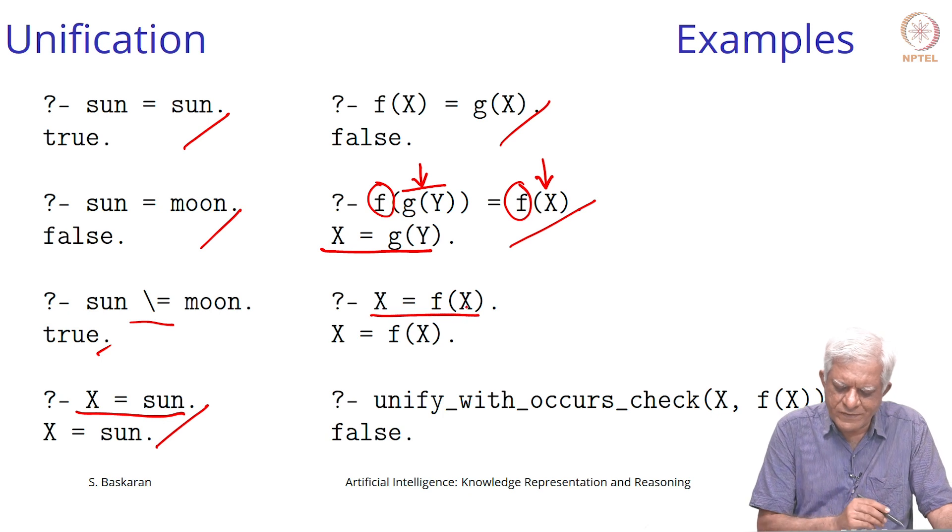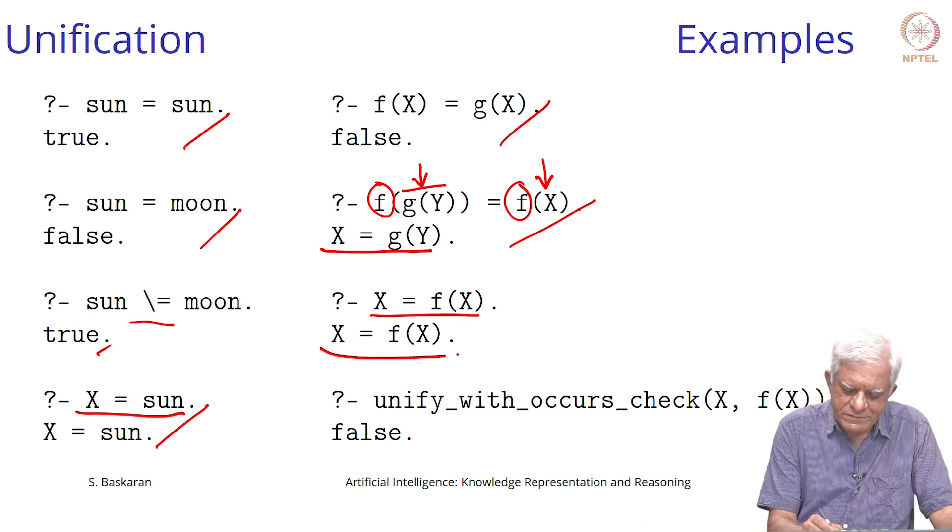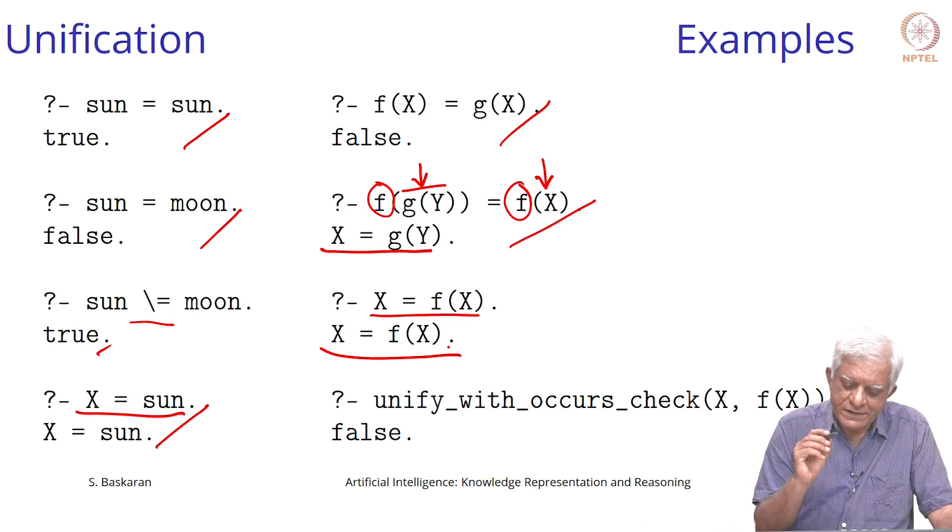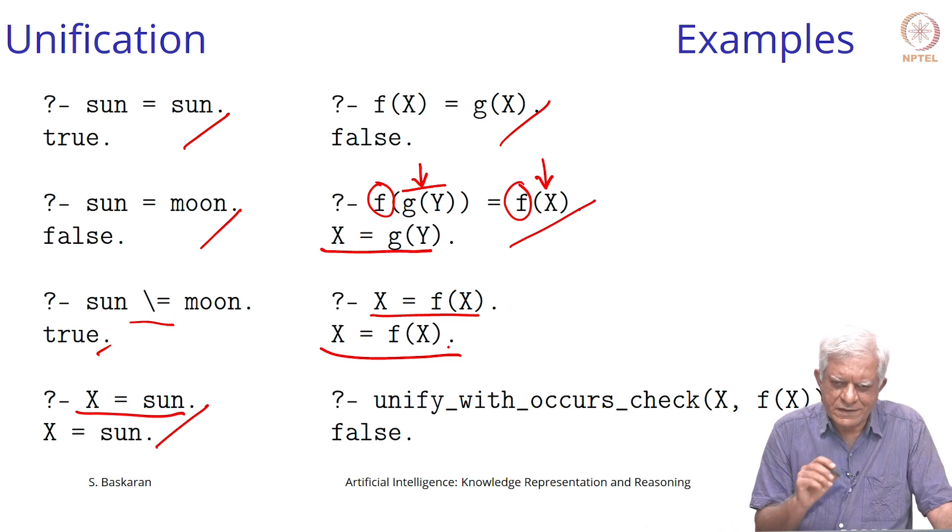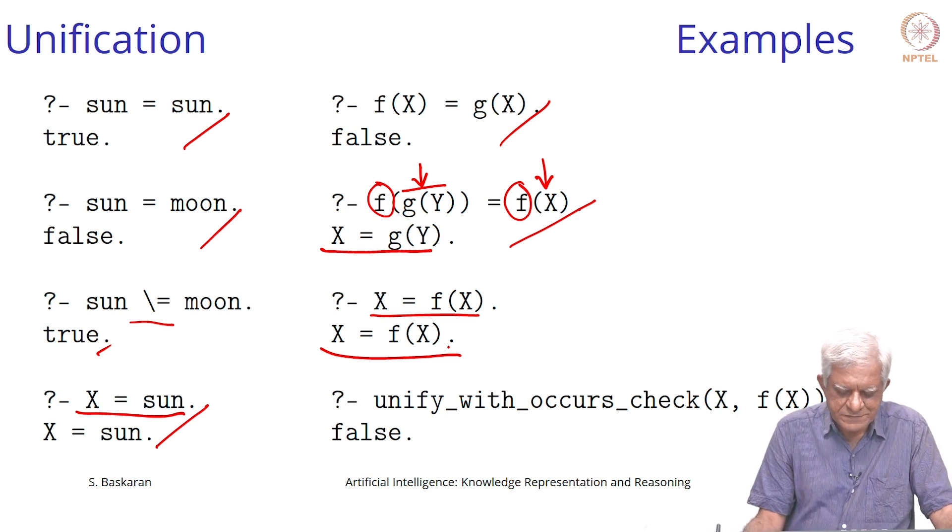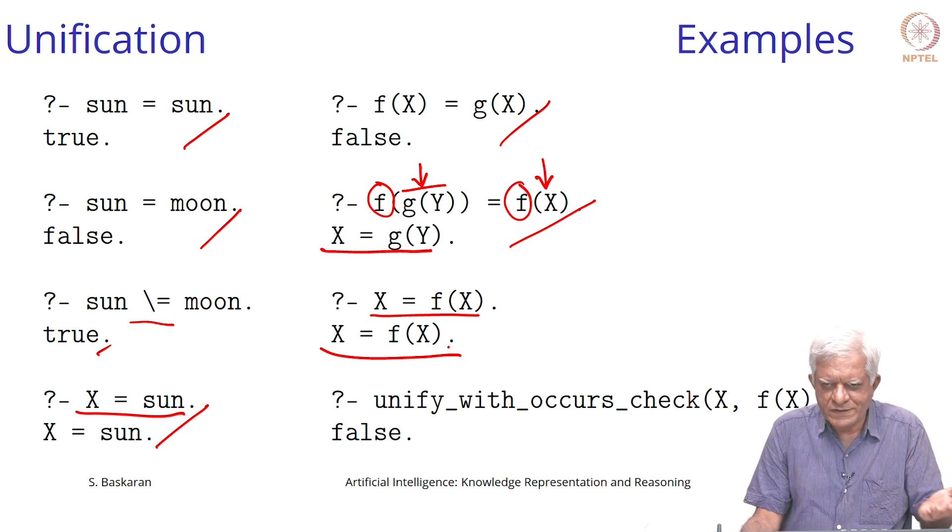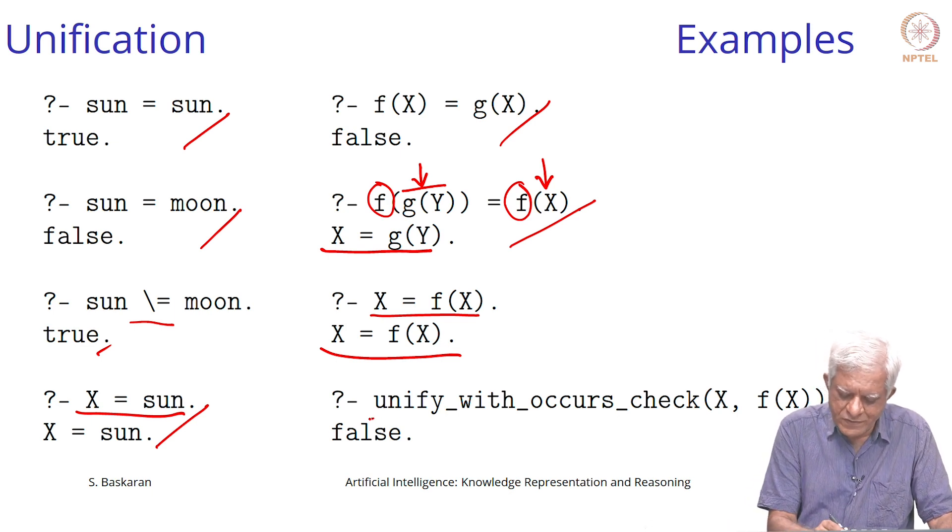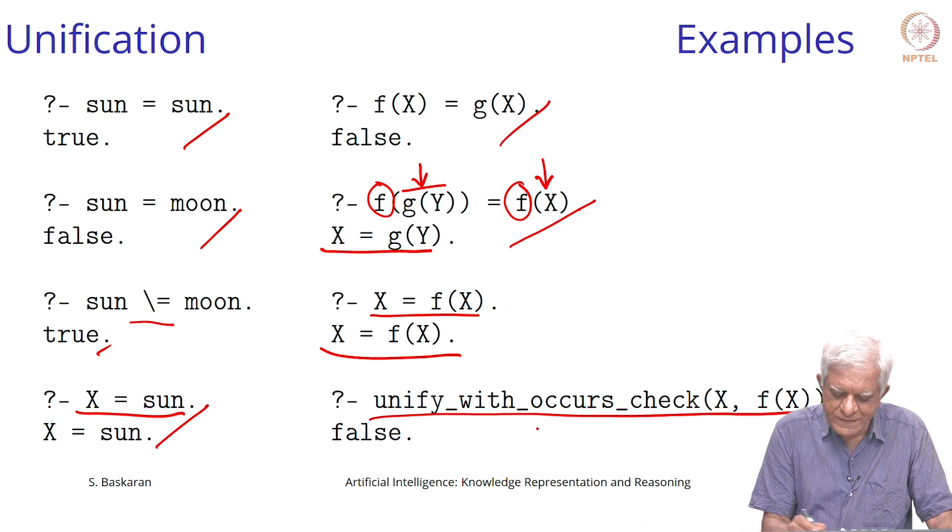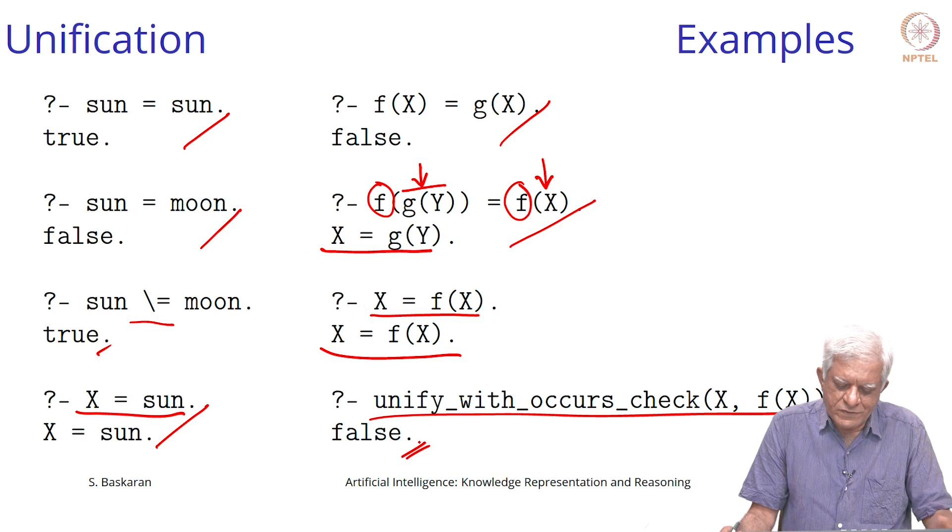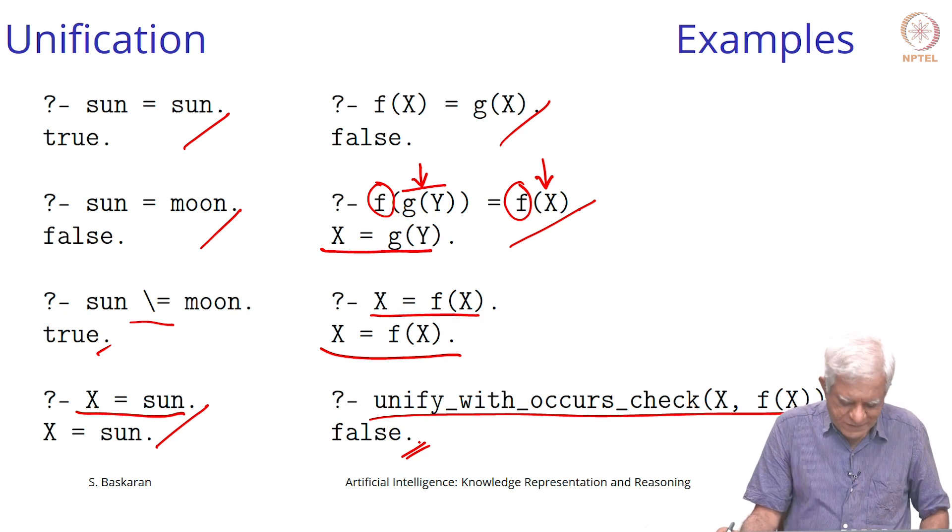Likewise, if you say x equal to f of x, it will say yes, x equal to f of x, but this has not used the occurs check. It has allowed you to say this, which of course can run into logical conundrums. If you were to say unify_with_occurs_check f of f of x, then it will say false. If you want to take care of that particular case, you must use unify_with_occurs_check.